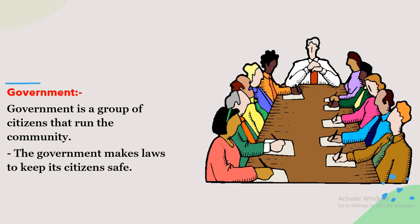Government is a group of citizens that run the community. For example, in your class, who leads the class? Who puts the rules in the class? Yes, the teacher. The teacher puts the rules for the class. In the school, who helps with the rules for the school? Who is the leader of the school? Yes, the principal. The principal leads the whole school and puts the rules for the school.